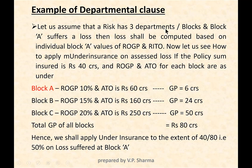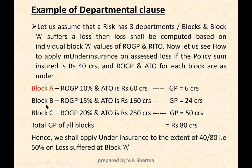In our example, the risk has three departments. If Block A suffers a loss, the loss shall be computed based on Block A's individual values — its rate of gross profit and reduction in turnover. Now, what we are discussing under these circumstances is how to apply under-insurance. Block A, which is affected by loss, has a rate of gross profit of 10% and annual turnover of 60 crores, so 10% of 60 crores equals 6 crores.